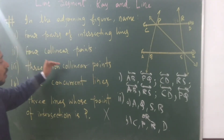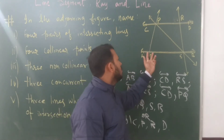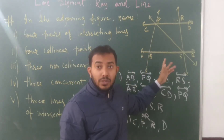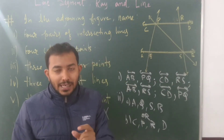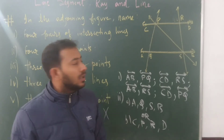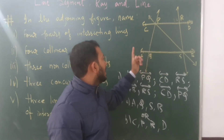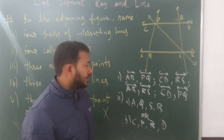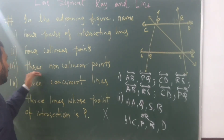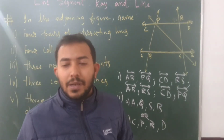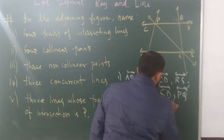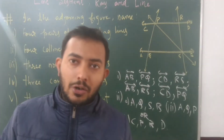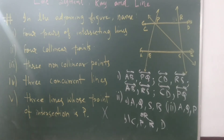Next, three non-collinear points. Take any two points like A, Q and then take P. A, Q, P are non-collinear. If you say A, Q, S — no, they are collinear because they lie on the same line. You need to take at least one point which does not lie on the same line. You can also say A, S, R or P, S, B. There are many options, but your answer may be A, Q, and P.